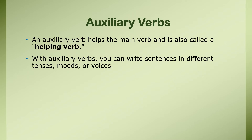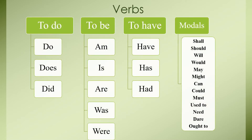There are basically three auxiliary verb families. The first family is 'to do', the second is 'to be', and the third is 'to have'. We also have modal auxiliary verbs — there are so many of them. But in this video, I am going to tell you about only these auxiliary verbs. My next video will be purely for modal auxiliary verbs.